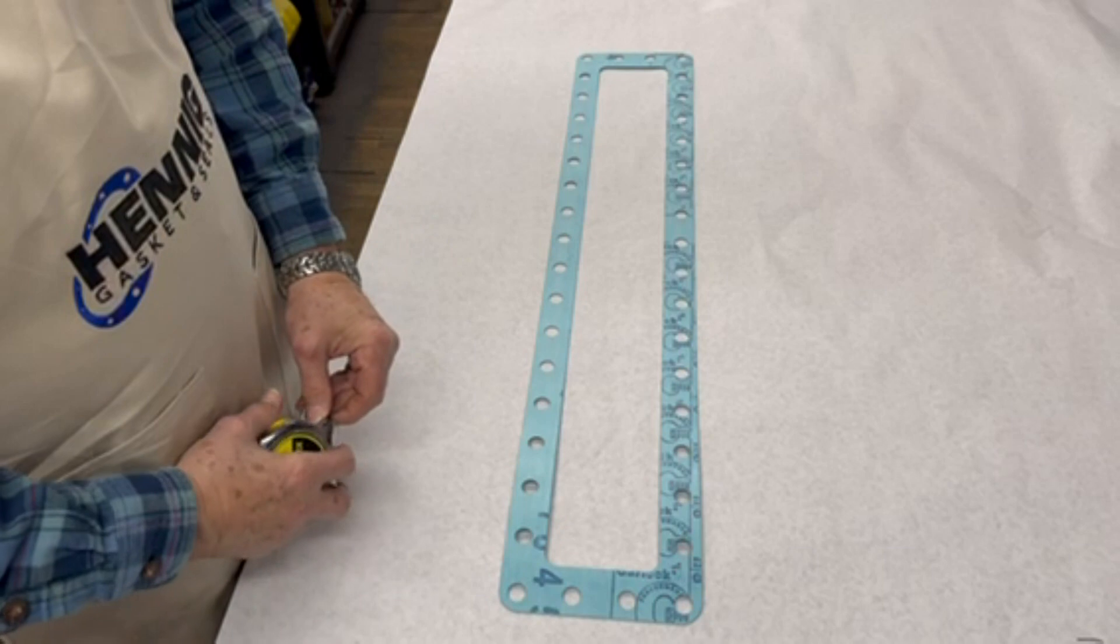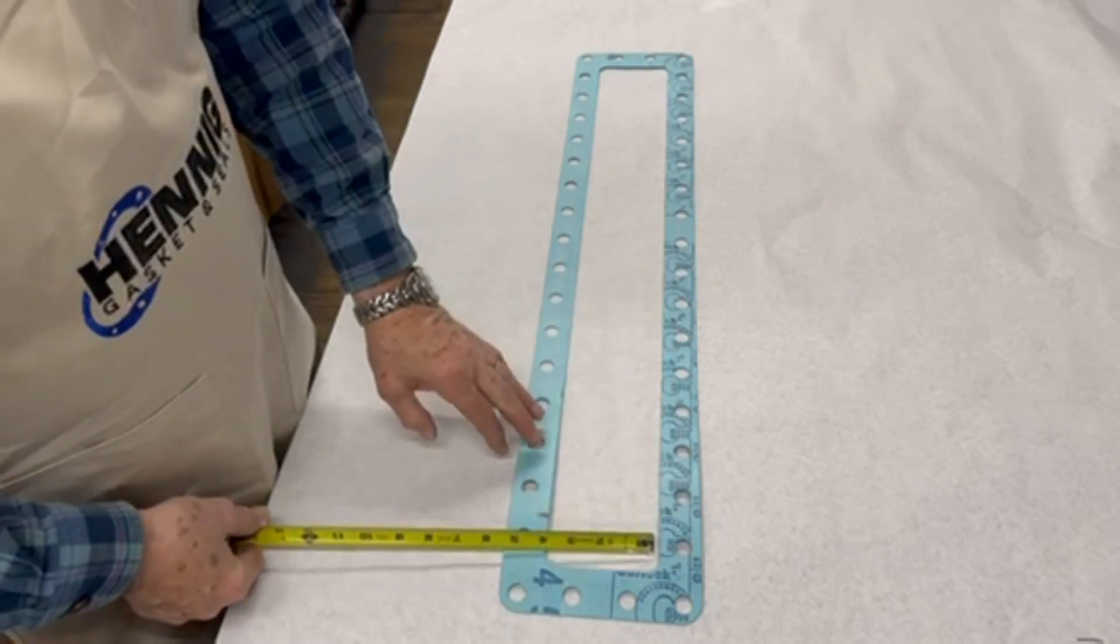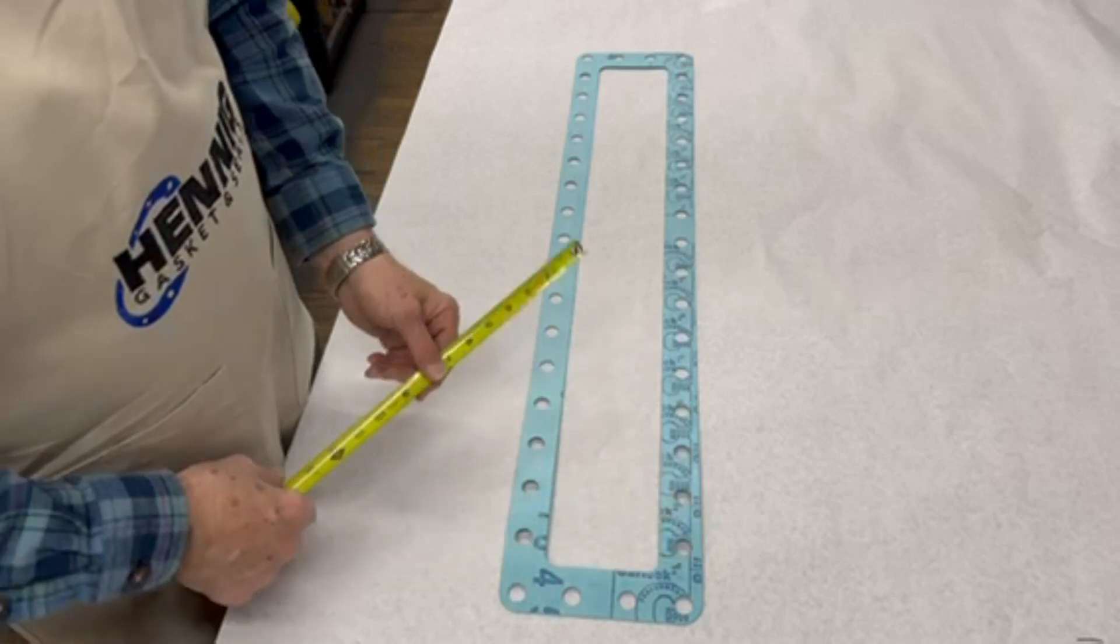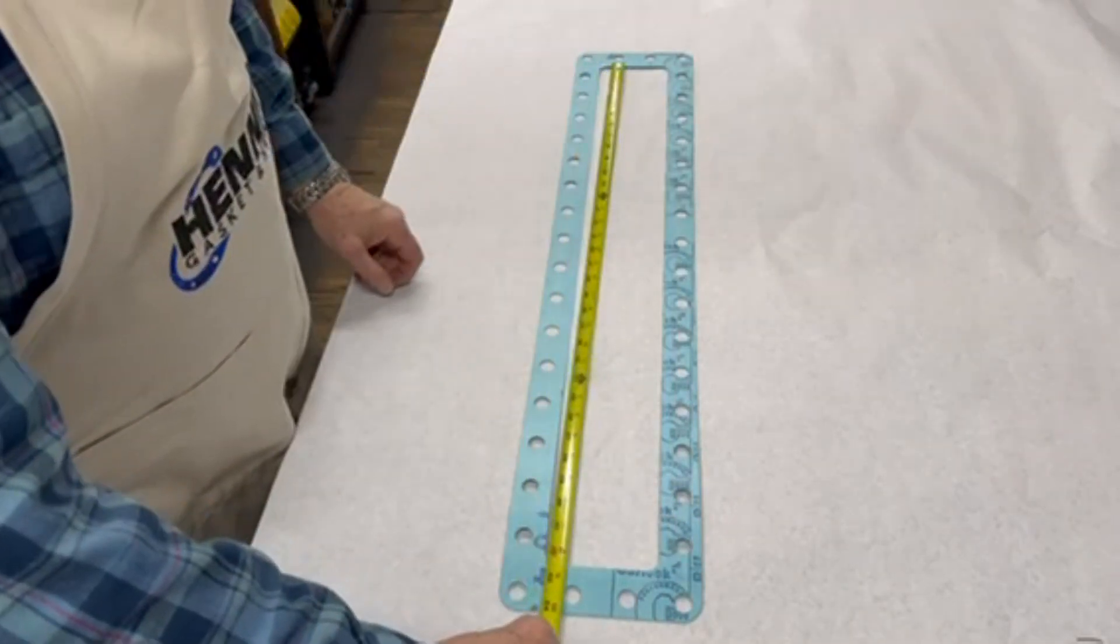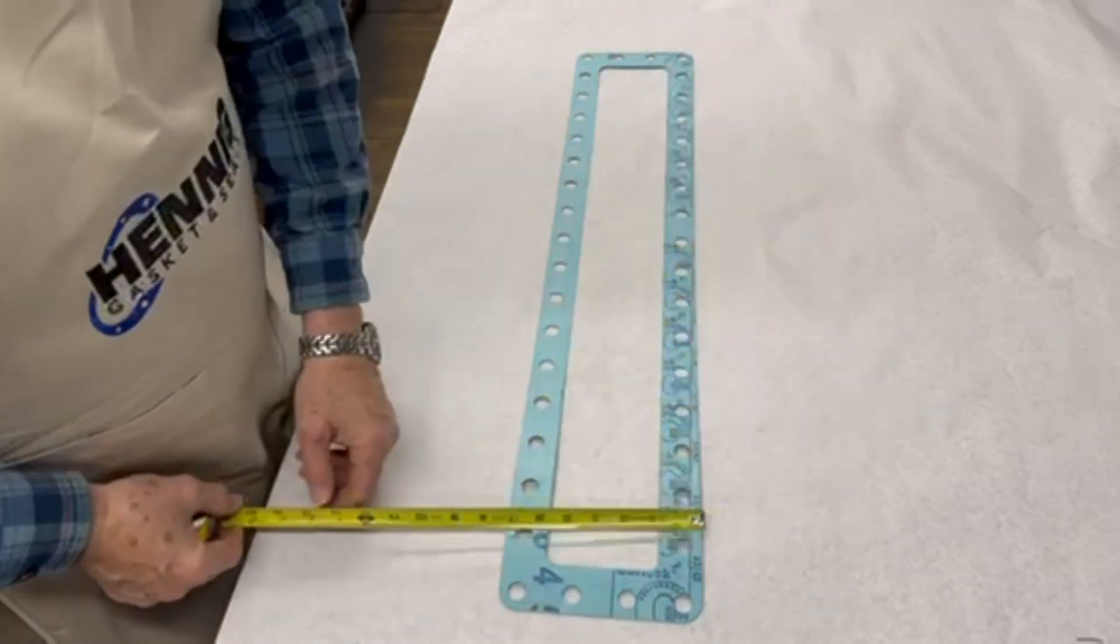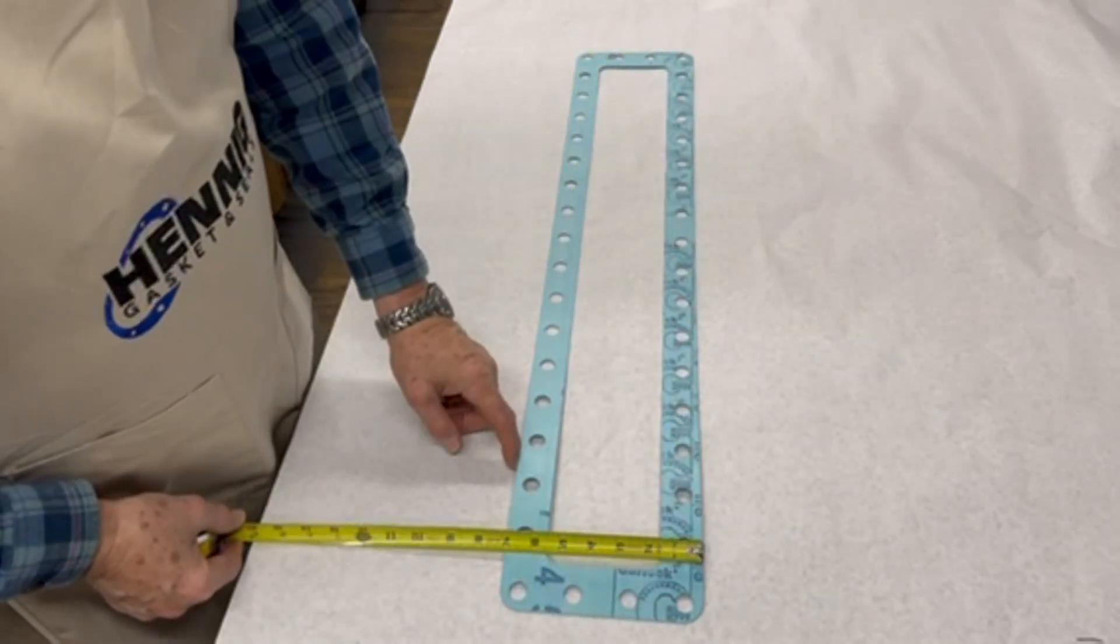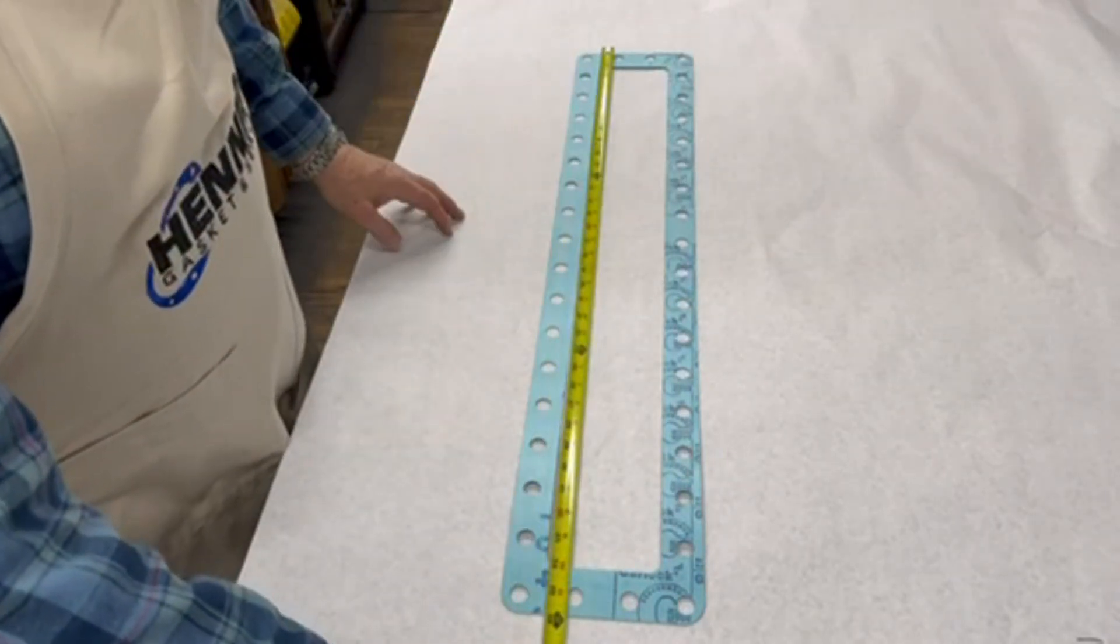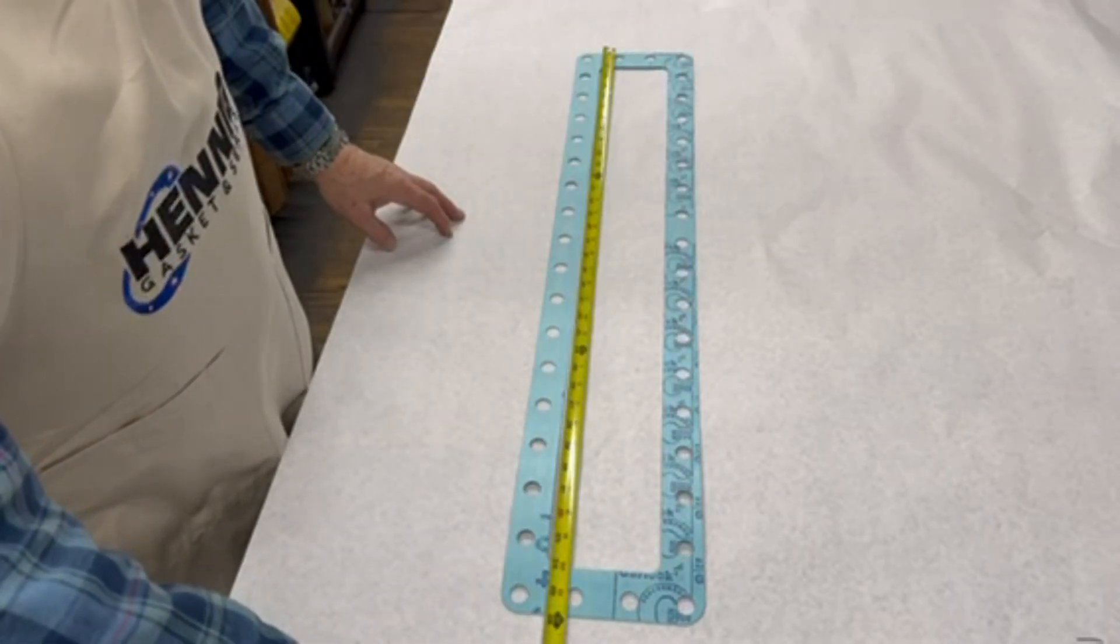First we'll get the inside dimensions. So this inside is 4 inches by 32 and a half inside, and 6 and 7 eighths by 35 and 3 fourths outside.